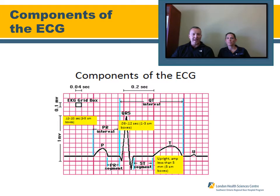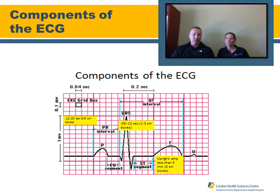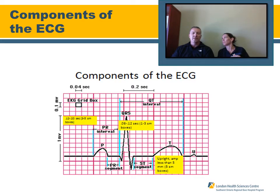The PR interval should be between 120 and 200 milliseconds, or three to five small boxes. For the QRS complex, we want to make sure it's upright and narrow — it should not exceed 120 milliseconds in width, meaning no wider than three small boxes. The T wave should not be any higher than five millimeters — five small boxes — above the isoelectric line.